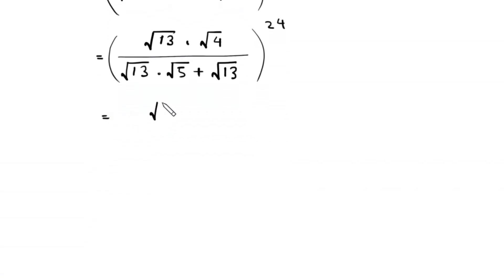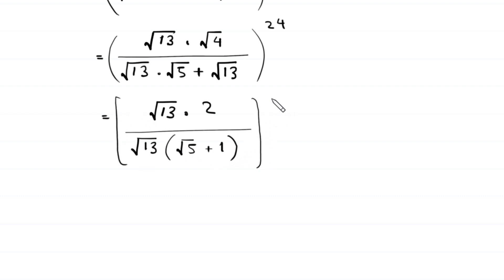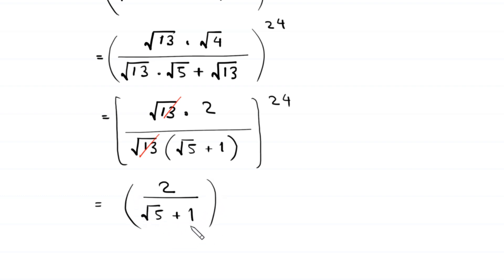Next, root 13 times square root of 4 gives 2 in the numerator. From the denominator we factor out root 13 as a common factor, leaving root 5 plus 1, whole to the power 24. This root 13 cancels with the numerator's root 13, so the expression becomes 2 divided by root 5 plus 1, whole to the power 24.